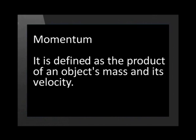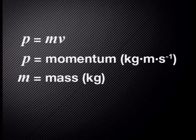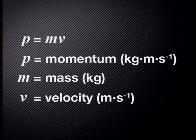Momentum is defined as the product of an object's mass and its velocity. It is given by the equation P equals mass times velocity, where P is the momentum measured in kilogram meters per second, M is the mass of the object measured in kilograms, and V is the velocity measured in meters per second.